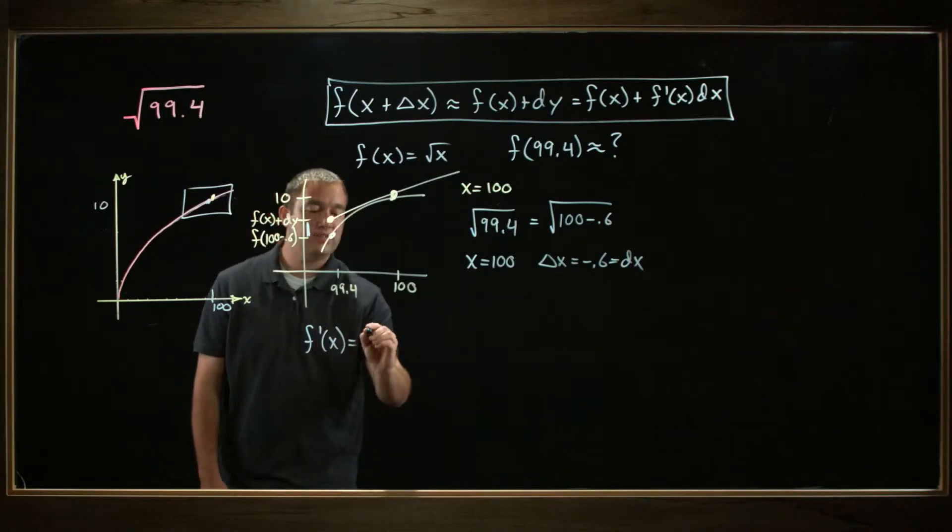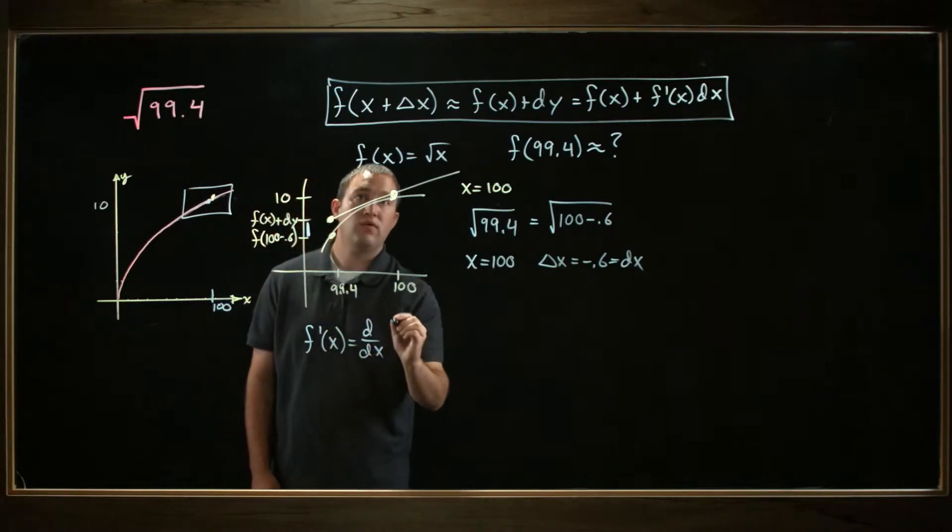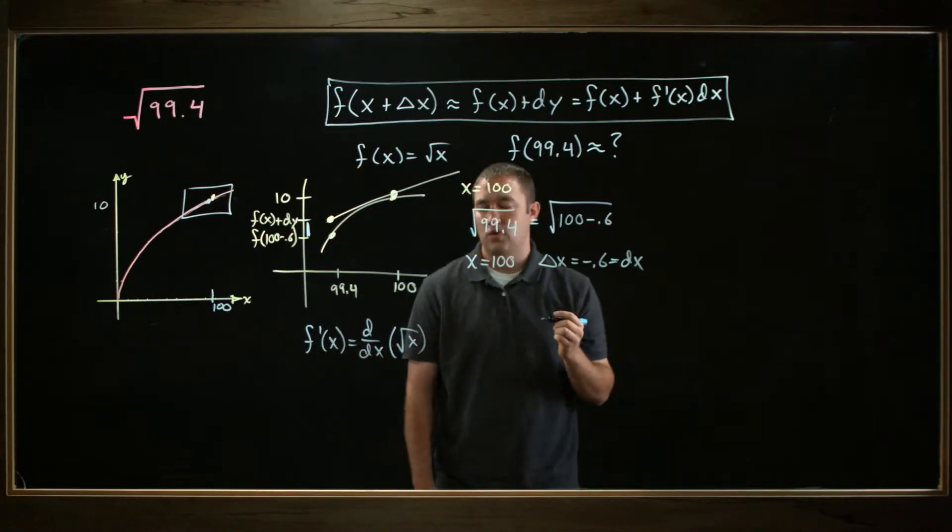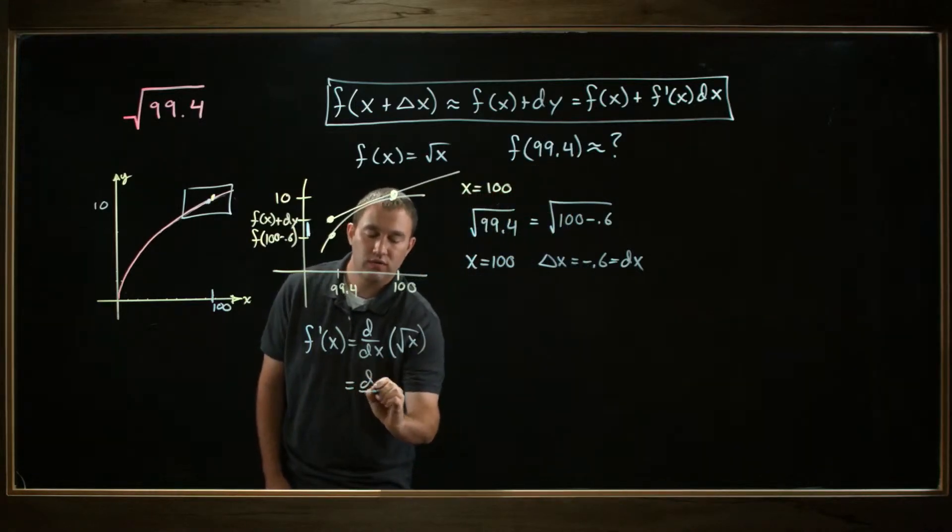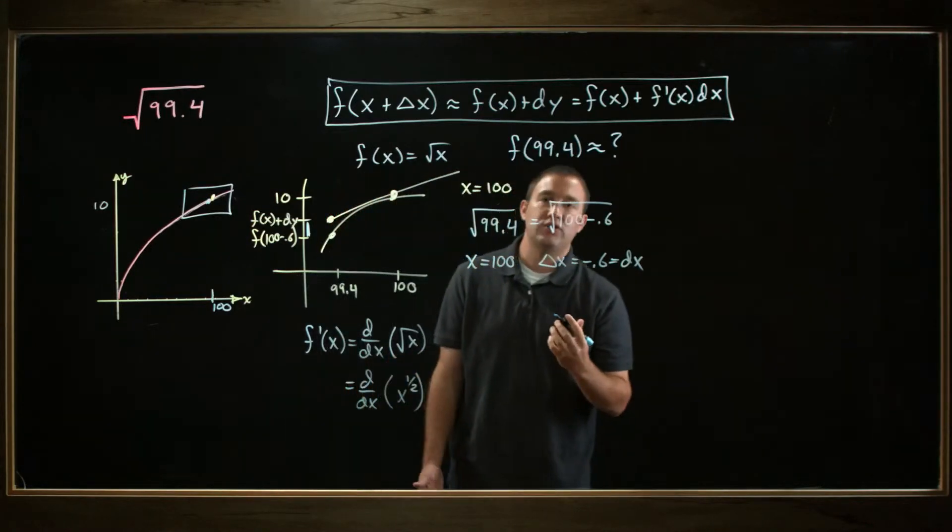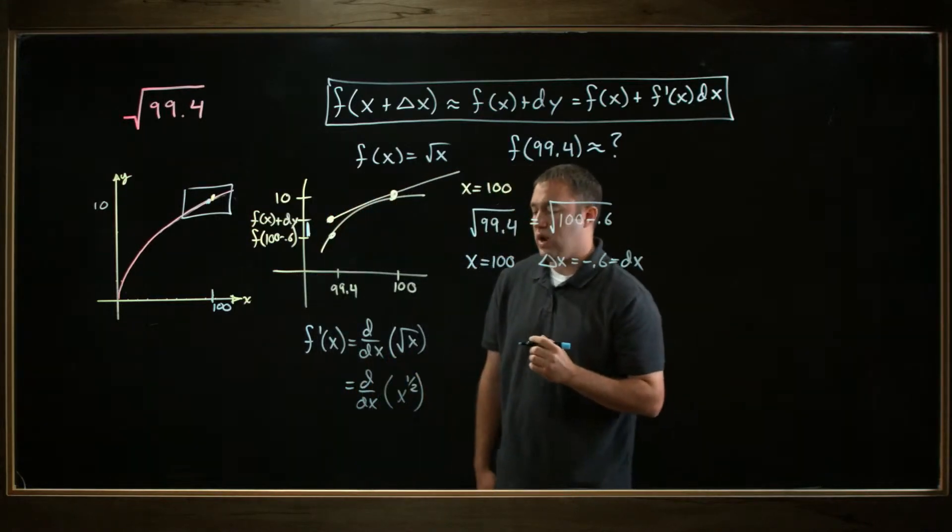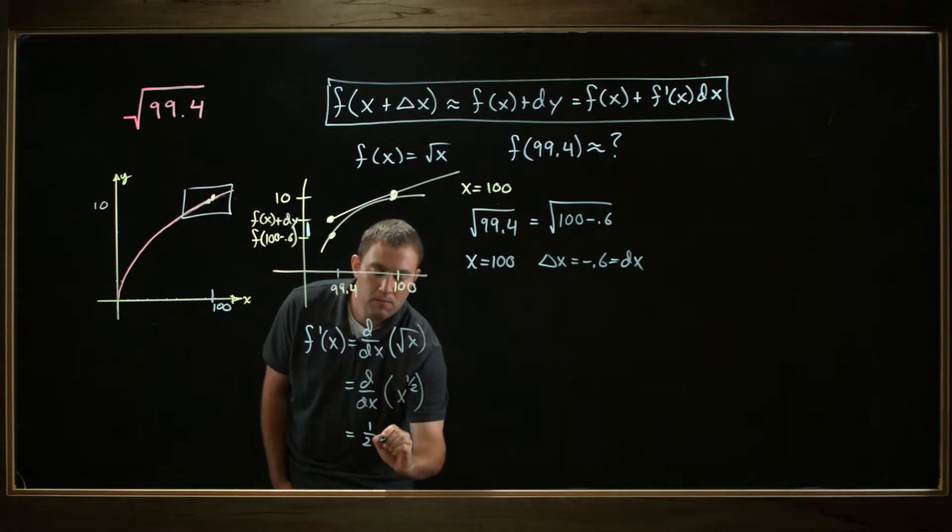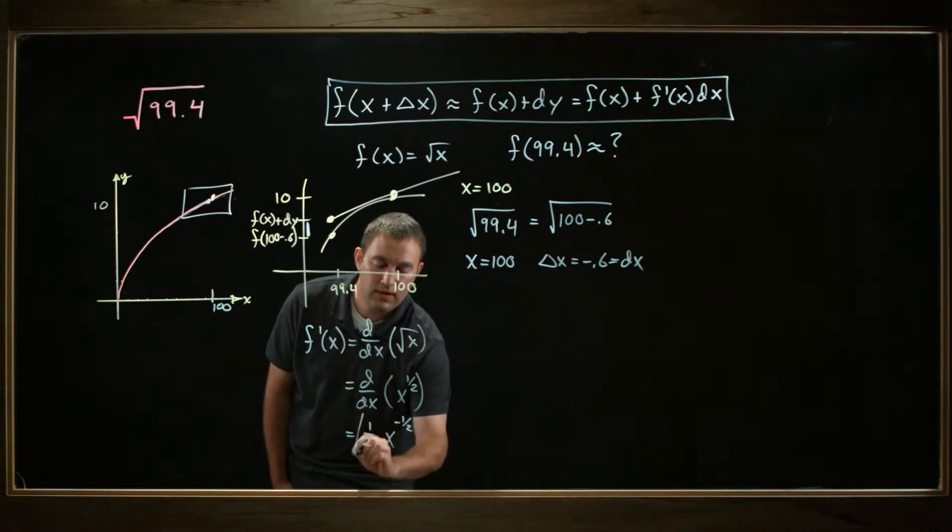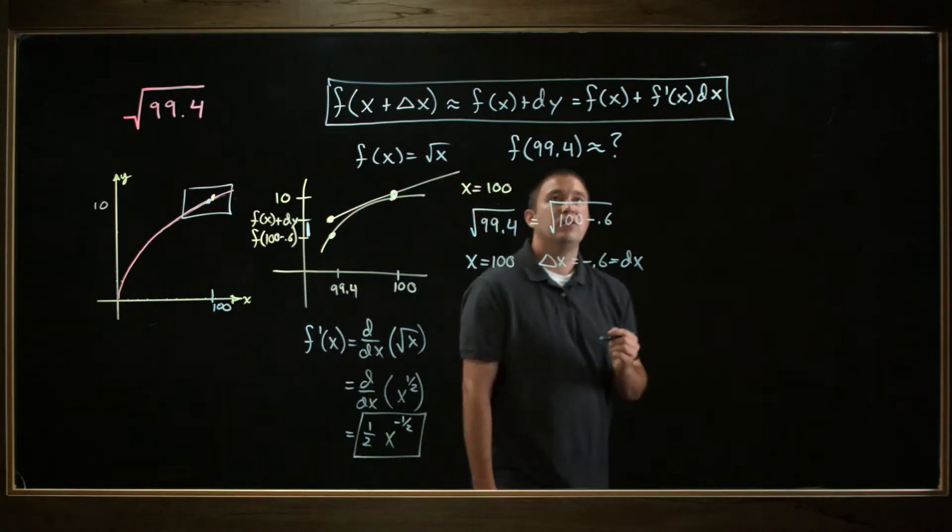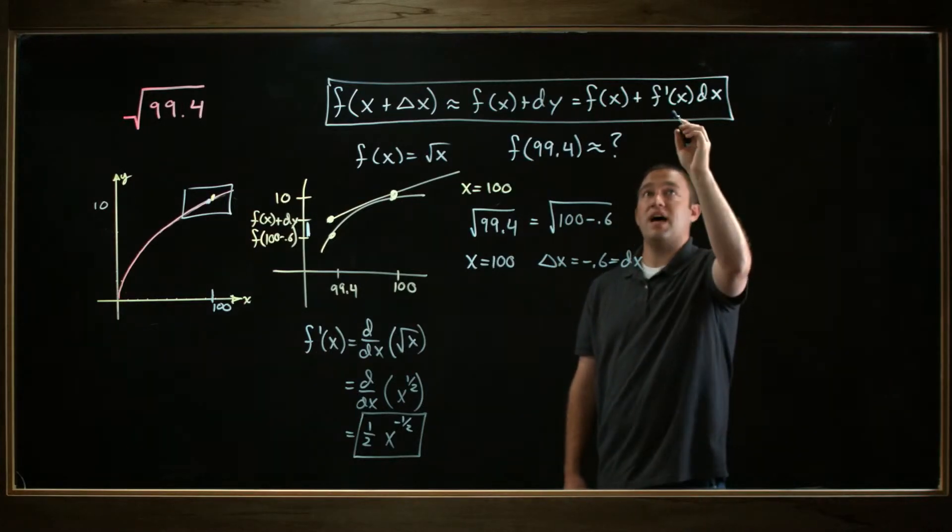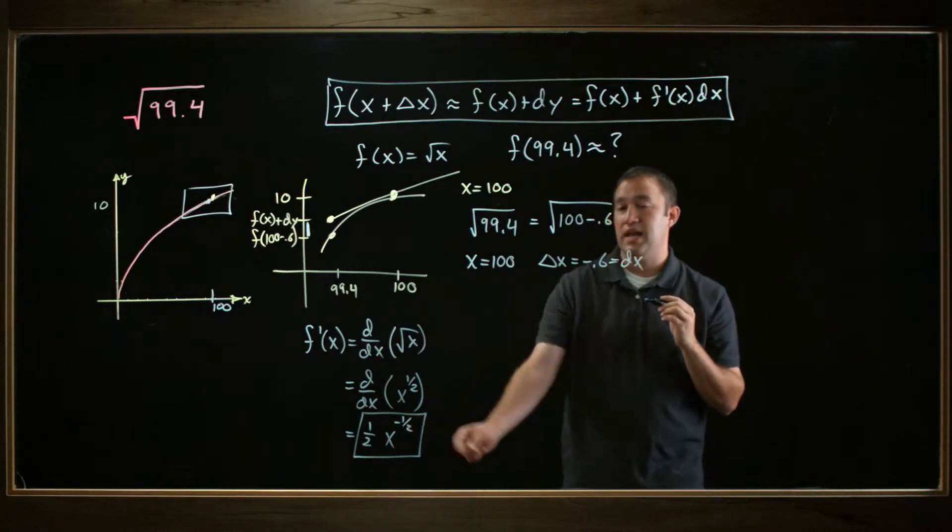f prime of x is the derivative with respect to x of the square root of x. Sometimes we like to rewrite that as x to the 1 half, so this is the derivative with respect to x of x to the 1 half. That derivative is not too hard to find. You take down the 1 half, reduce the exponent by 1, so 1 half minus 1 is negative 1 half. And that's your derivative.